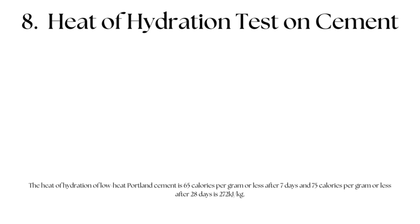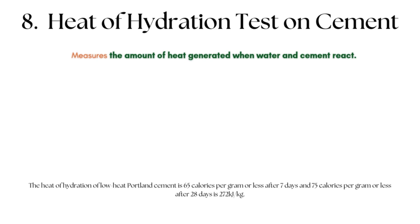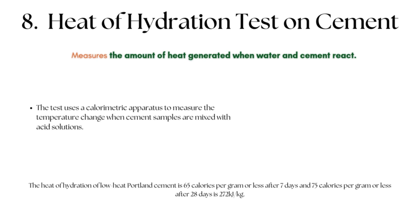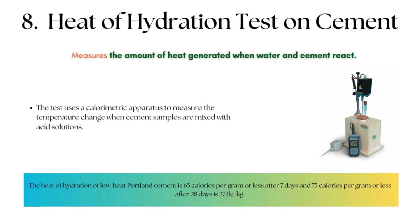Heat of Hydration Test on Cement: The heat of hydration test measures the amount of heat generated when water and cement react. A calorimetric apparatus is used to measure the temperature change when cement samples are mixed with acid solutions. The heat of hydration of low-heat Portland cement should be 65 calories per gram or less after 7 days, and 75 calories per gram or less after 28 days.